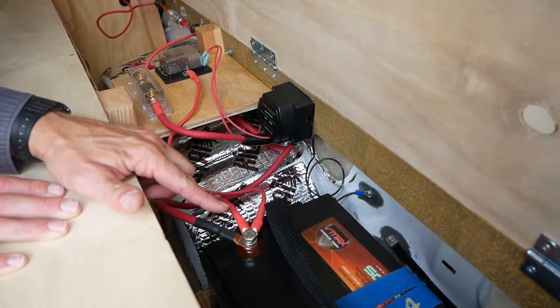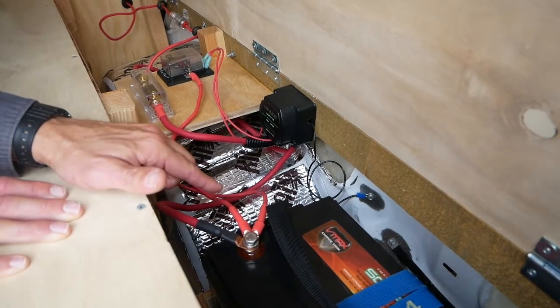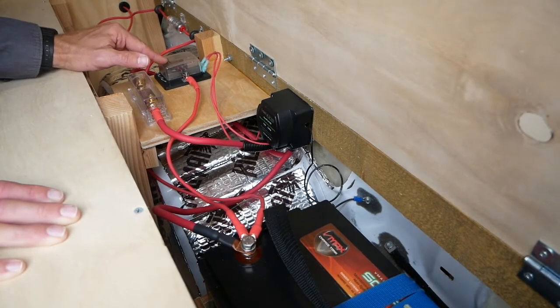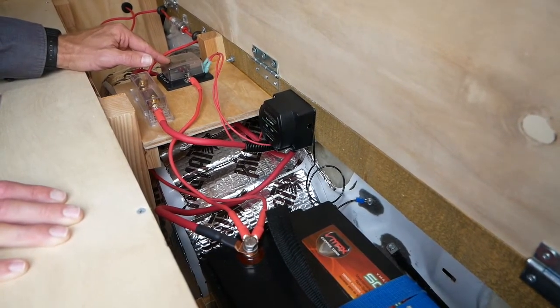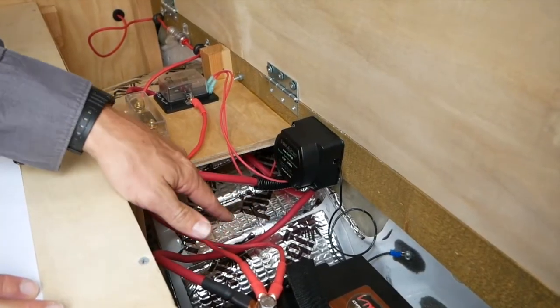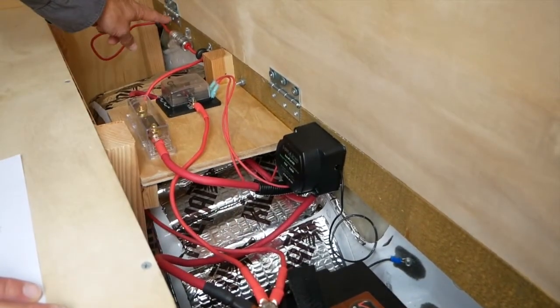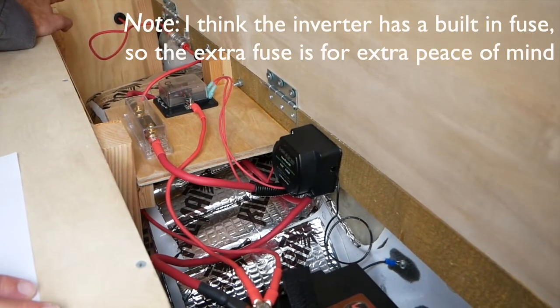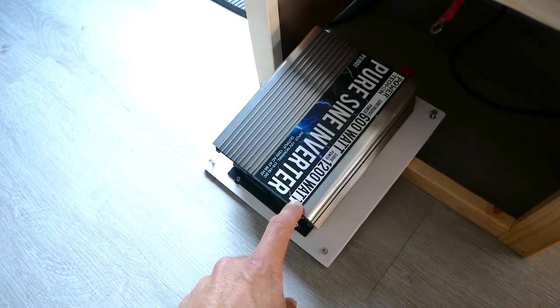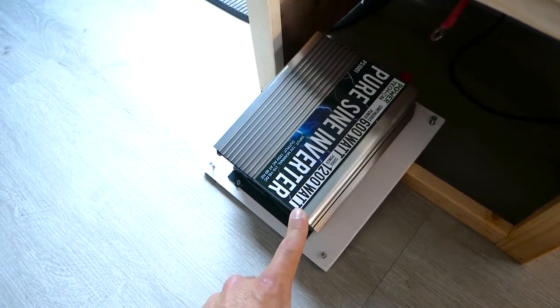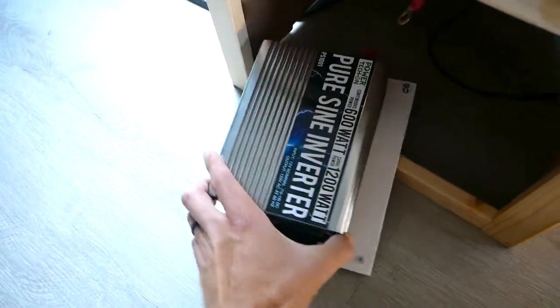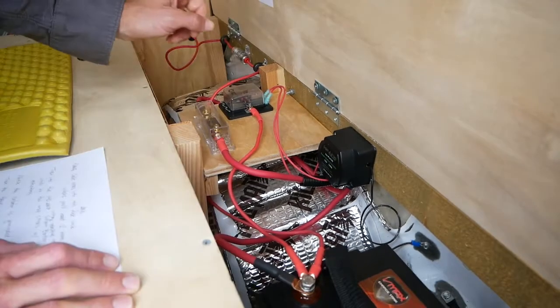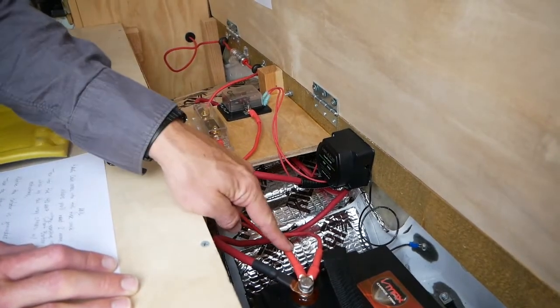Back to the positive terminal on the battery, we've got two eight-gauge wires leaving. One of them is going to this fuse block where the DC loads are coming out. But this other eight-gauge wire is going over here to this 30 amp inline fuse, and then that goes over to the AC inverter. It's a 600 watt clean sine AC inverter where you can plug in anything that would normally plug into a wall outlet in a house. That inverter is also grounded to bare metal.